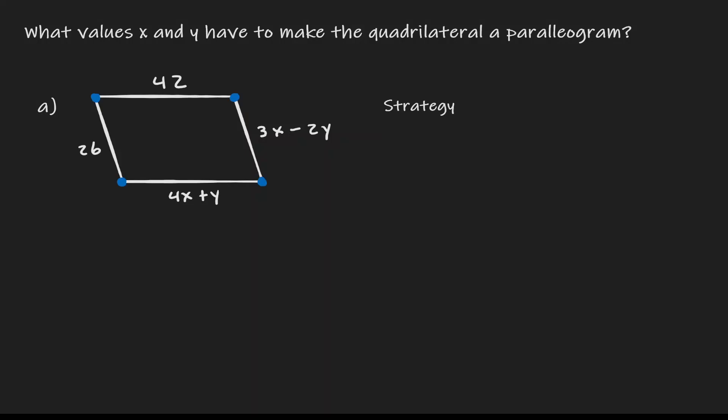Here we have a quadrilateral, and what we want to do is identify what values of x and y will make this quadrilateral a parallelogram. Now let's think about strategy. If we identify where those variables are, they are on the sides. So let's think about what properties we need to show in terms of the sides of a parallelogram.